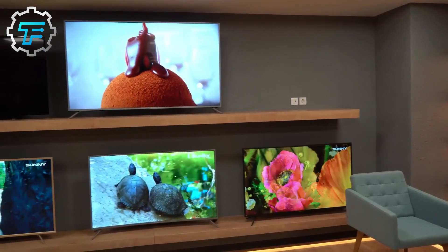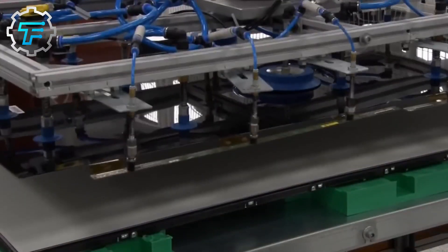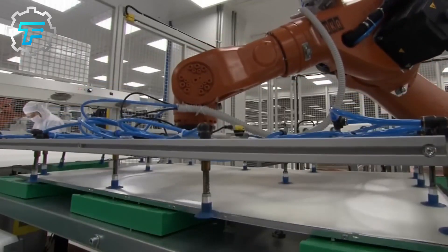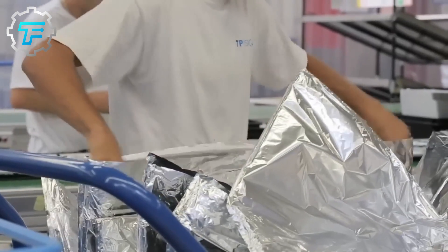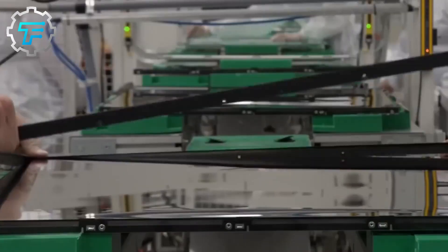In edge lit, LEDs are placed at the edge of the screens, and depending on the display, they can be arranged all around the screen, on the left and right sides only, or at the top and bottom only. This configuration allows the screen to be very thin, but it can cause some spots on the screen to be brighter than others for a less uniform picture.